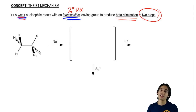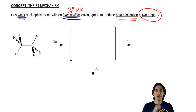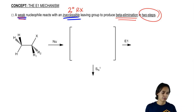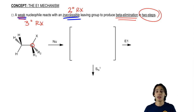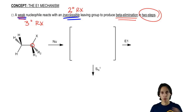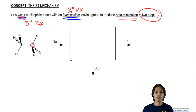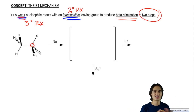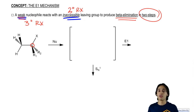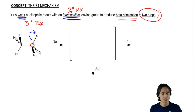Let's talk about this mechanism and see how you could get the SN1 or the E1. Here I've got a tertiary alkyl halide. The first step is going to be identical for both of these reactions. Is it backside attack? No, because the nucleophile isn't strong so it can't initiate anything. What actually happens is that the leaving group leaves by itself — it dissociates.